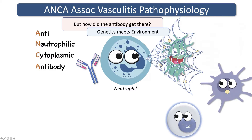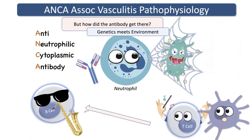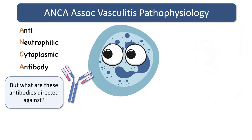Then it'll take that to the T cell and see what the T cell thinks. The T cell might recognize this as self and say, no, we're not responding to that today. Or the T cell might say, actually, that looks like something I need to attack. And if it does recognize it as foreign and mounts an immune response, it will promote B cells to differentiate into plasma cells and produce antibodies against those things inside the neutrophil. So we have an antibody against something inside the neutrophil.